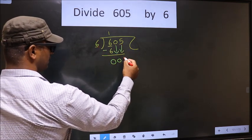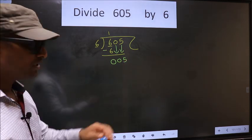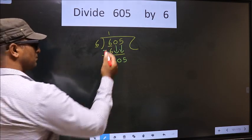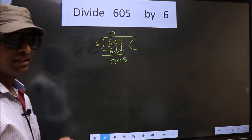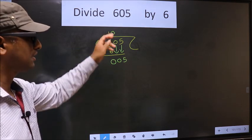That is 5 down. Here you should remember: whenever you are bringing down two numbers, compulsory you should put 0 in the quotient. I repeat, whenever you are bringing down two numbers, compulsory you should put 0 in the quotient.